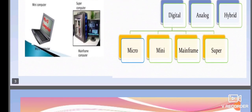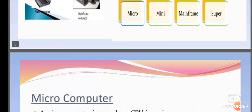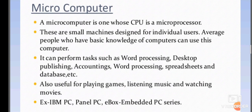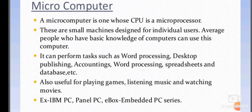Now we will see the features of these computers. The first one is microcomputer. A microcomputer is one whose CPU is a microprocessor. These are small machines designed for individual users. Average people who have basic knowledge of computers can use this computer, and it can perform tasks such as word processing, desktop publishing, and accounting.